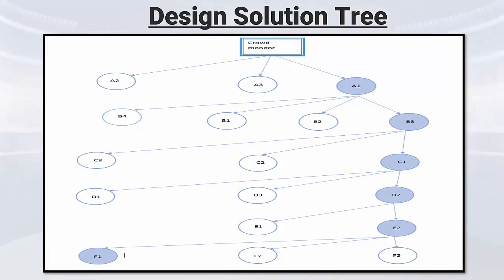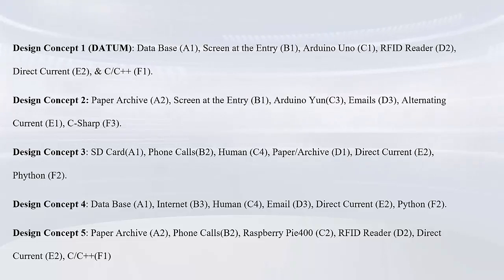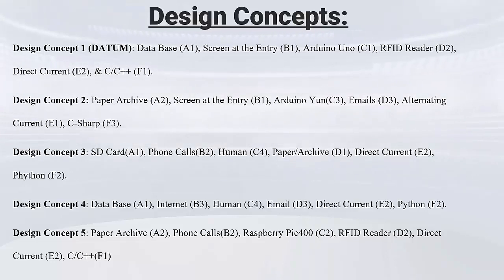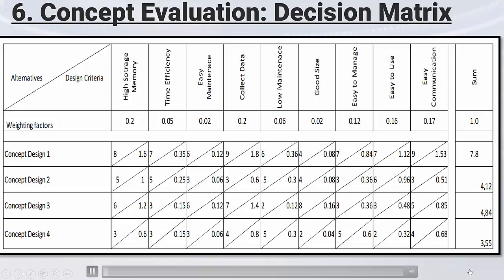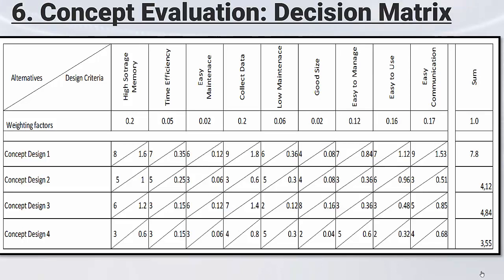Before anything else, we generated five design concepts in which the data corresponds to using a database screen entry, Arduino Uno, RFID reader, Direct Current, and C or C++ programming language. There exist many methods on which we can perform a concept evaluation. Among them, we find our decision matrix, which enables us to evaluate and prioritize a list of options and is used as a decision-making tool. The team established a list of weighted criteria, such as 0.2 for collecting data and 0.12 for easy management, and evaluated each option against those criteria. At the end, Concept Design 1, which had the highest sum, was selected as the best option.